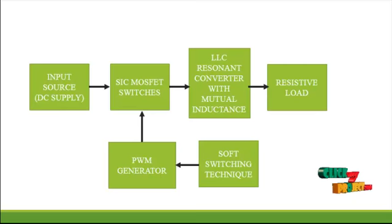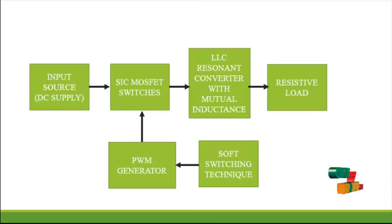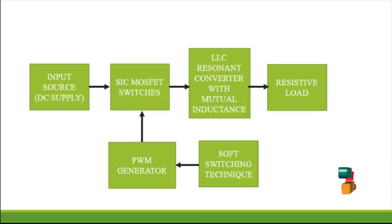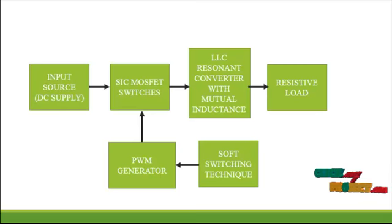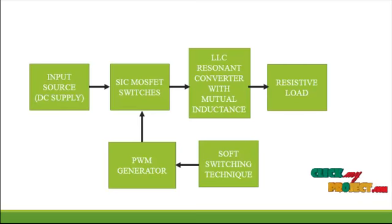The PWM generator supports many PWM techniques, and here we use the soft switching technique. The main objective of soft switching is to reduce switching losses and switching stresses, which increases the converter lifespan. The resonant network consists of a capacitor, leakage inductance, and the magnetizing inductance of the transformer.